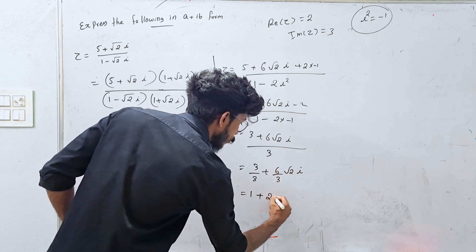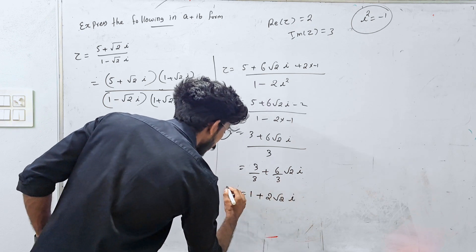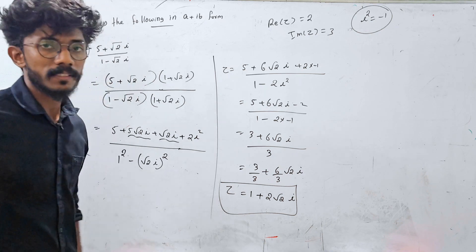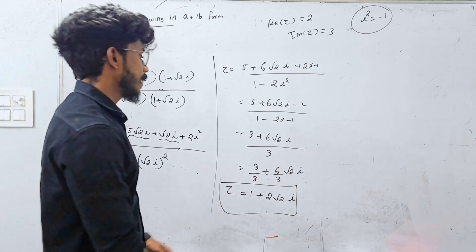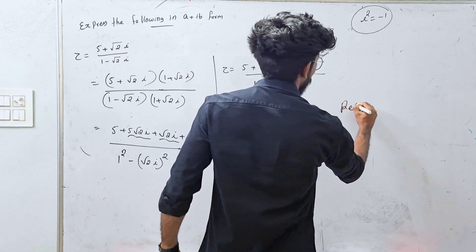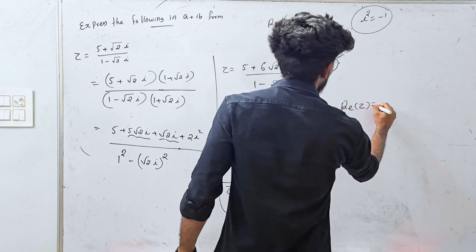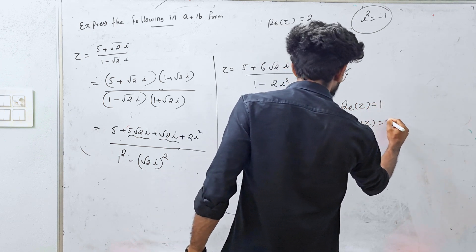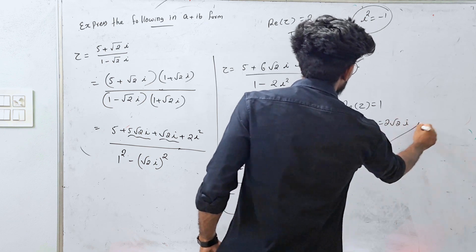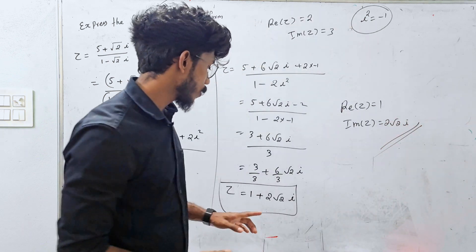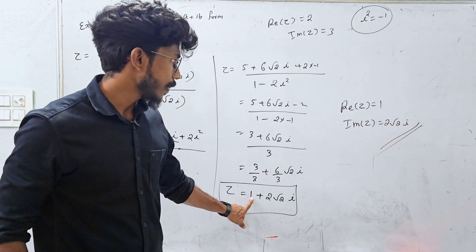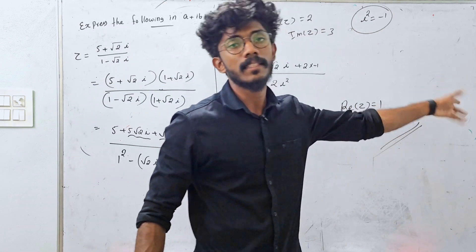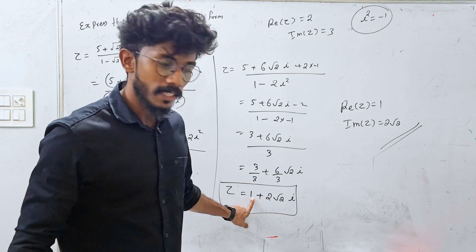Separating: 3 divided by 3 plus (6 root 2i) divided by 3 gives 1 plus 2 root 2i. This is the a plus ib form — the real part is 1 and the imaginary part is 2 root 2.